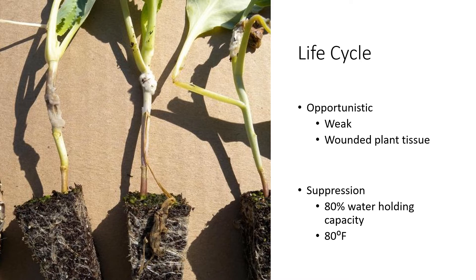Overall, Sclerotinia are opportunistic pathogens — they are not highly pathogenic. They wait for the opportunity to infect, usually as a result of weak plants or wounded plant tissue where they can easily enter. When we are doing any pruning, pinching, or any activity that wounds plants, we create an opportunity for this fungus to enter plant tissue.